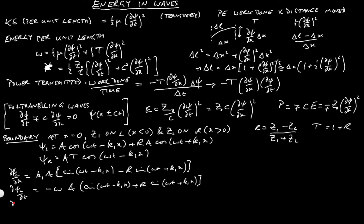And we need to work out dpsi right by dx, which is just k2 t a sine omega t minus k2 x. And finally, dpsi right by dt is given by minus omega t a sine of omega t minus k2 x.